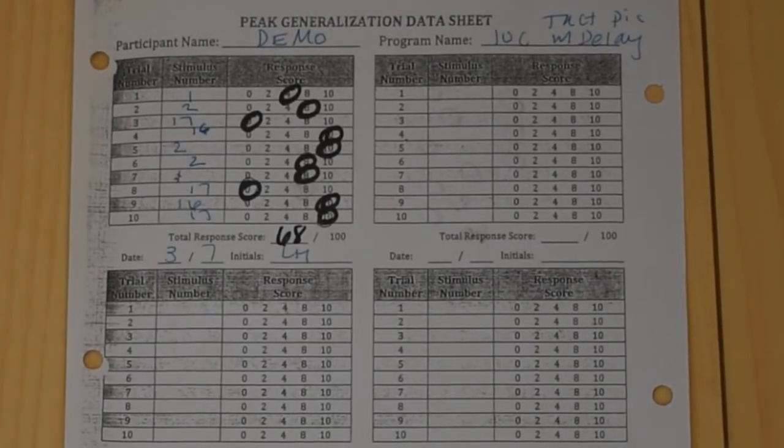All right. Go ahead and check your scores for peak generalization to act pictures with delay 10C.